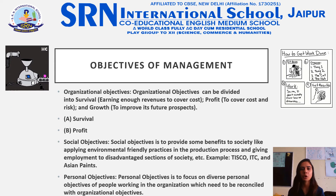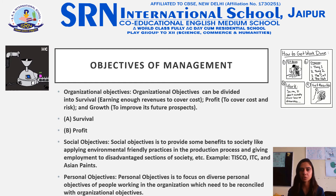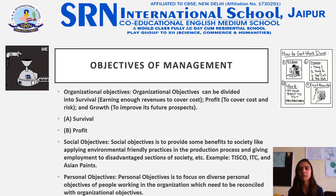The next topic is objectives of management. There are three types: organizational, social, and personal. Organizational objectives can be divided into survival, profit, and growth. Management ensures survival of the business long term through positive decisions. Profit plays an important role in facing business risk and running activities successfully. Growth can be measured by increase in sales, number of employees, number of products, and additional investment.